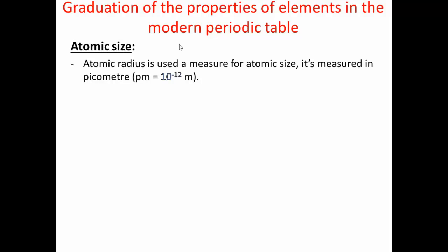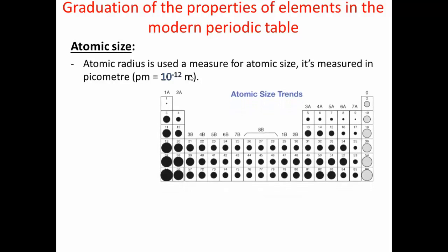Today we are going to talk about graduation of properties of elements in the modern periodic table. But first, let's remember the last lesson in which we were talking about the periodic table and the attempts of elements classification. We talked about the three main attempts of classification of elements, and then how to locate an element in the modern periodic table.